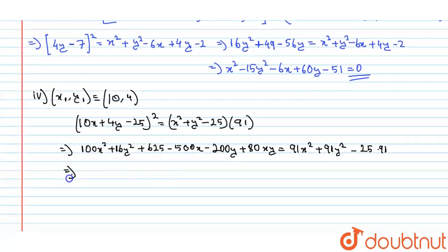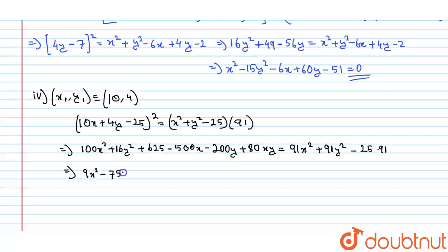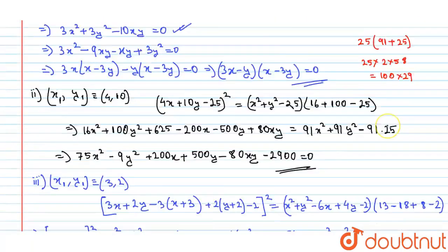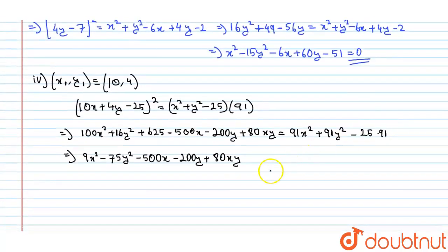After simplification: 100 - 91 = 9, so 9x²; 91 - 16 = 75, so -75y²; then -500x - 200y + 80xy + 625 + 25 × 91 = 2900. The final equation for part four is 9x² - 75y² - 500x - 200y + 80xy + 2900 = 0.